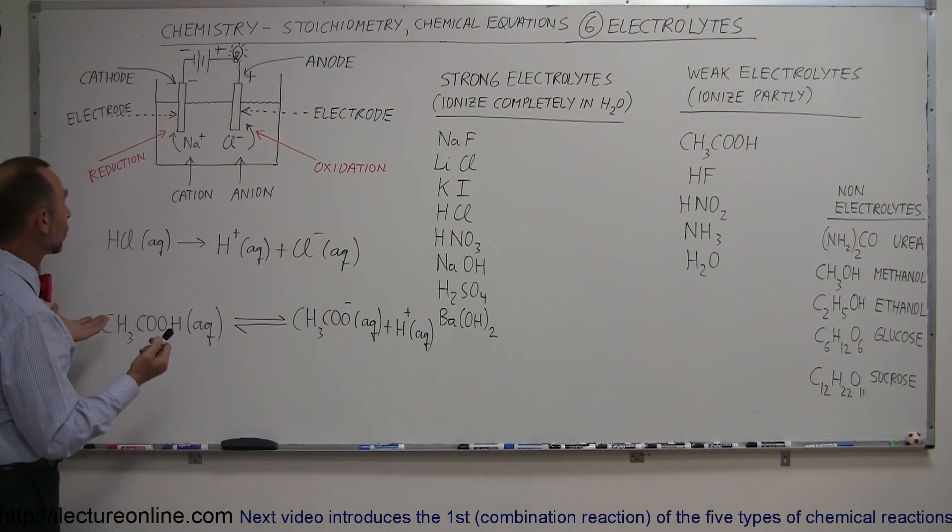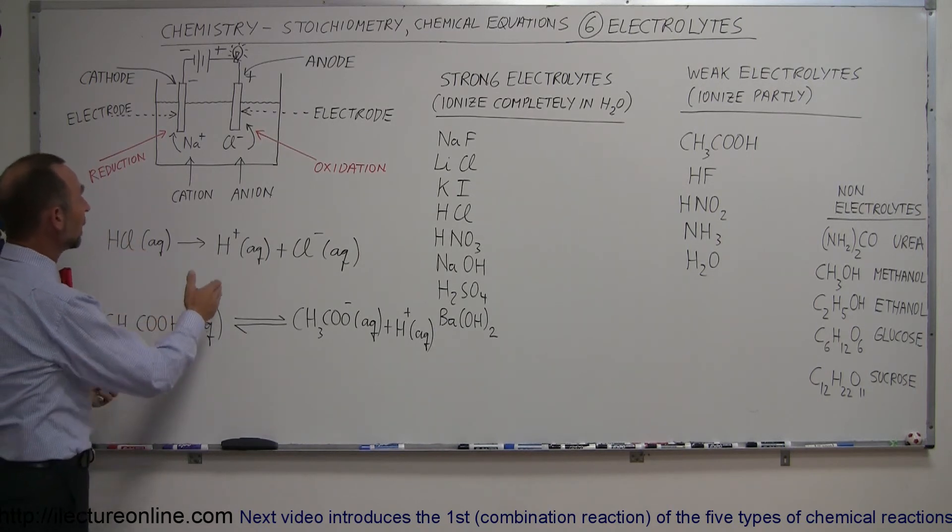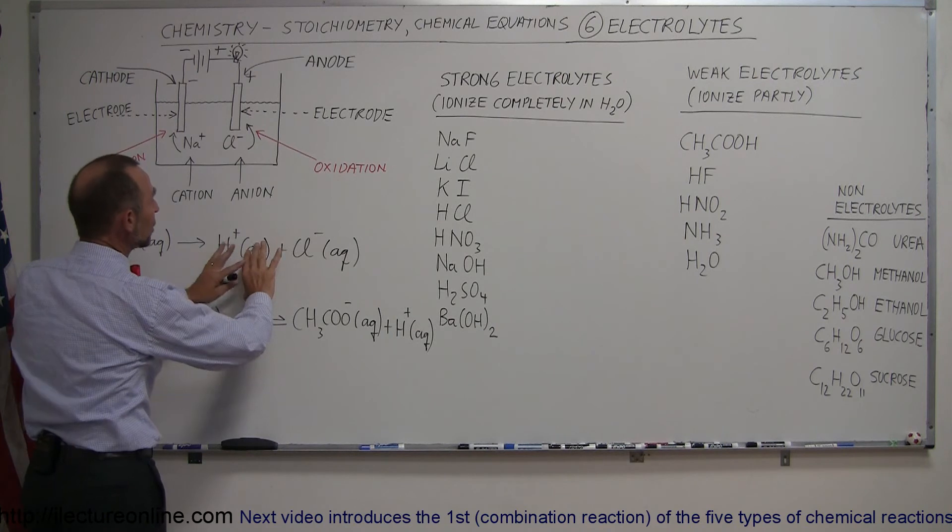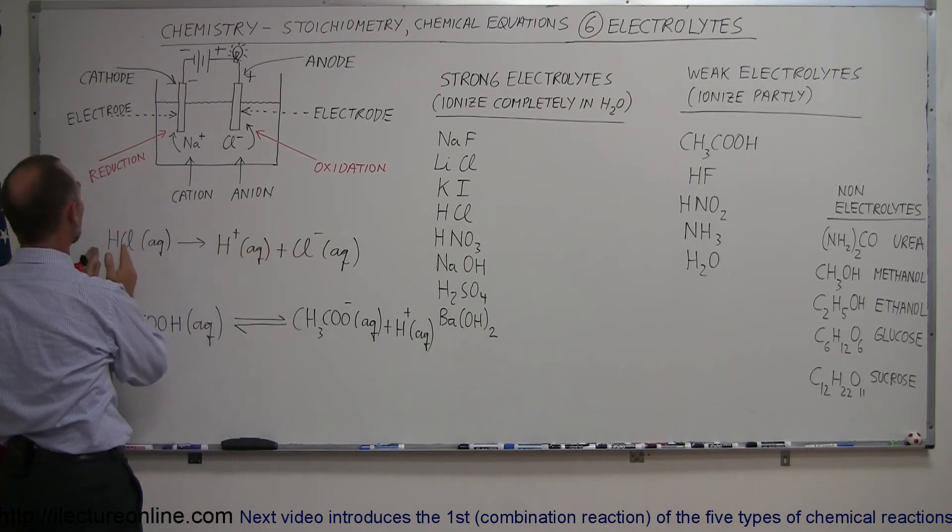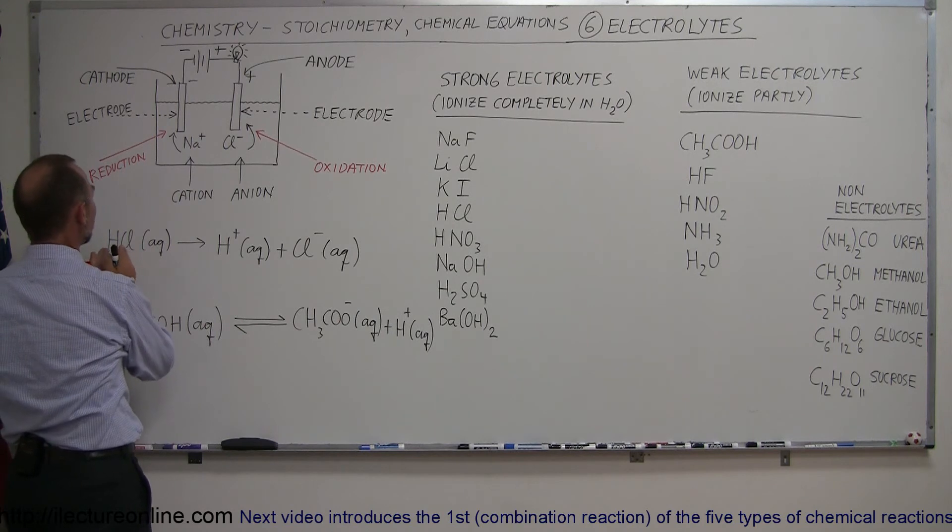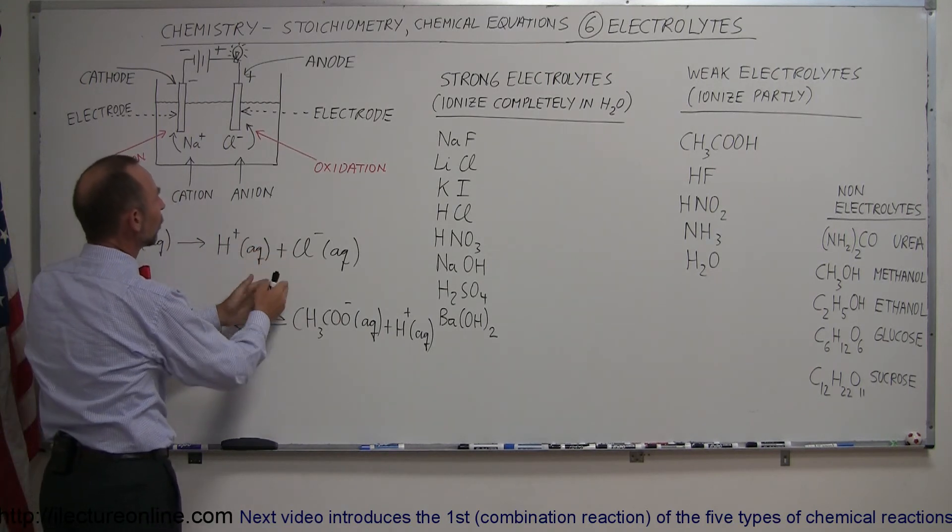Just to show you what these reactions would look like, if you put hydrochloric acid, aqueous hydrochloric acid in a water solution, the hydrogen will separate from the chlorine. You now have ions, and this reaction will happen completely, meaning all of the hydrochloric acid molecules will completely dissociate into hydrogen and chlorine, and therefore this makes it a strong electrolyte.